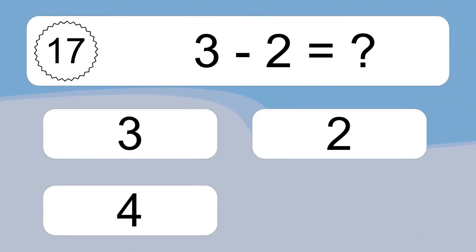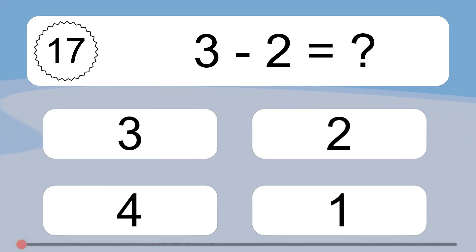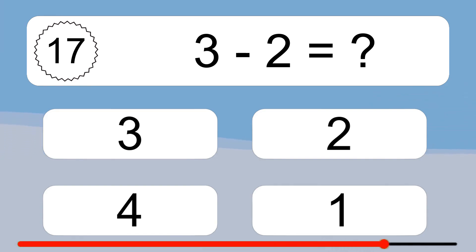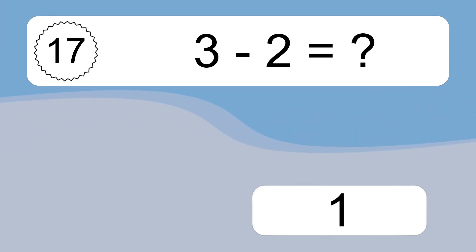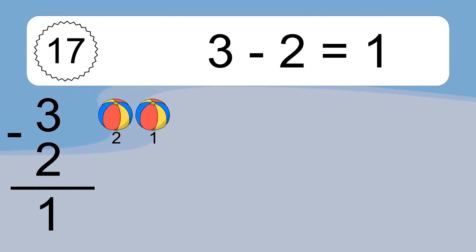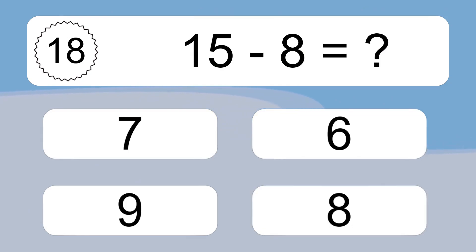3 minus 2 equals what? 3 minus 2 equals 1. Let's count it: 2, 1.